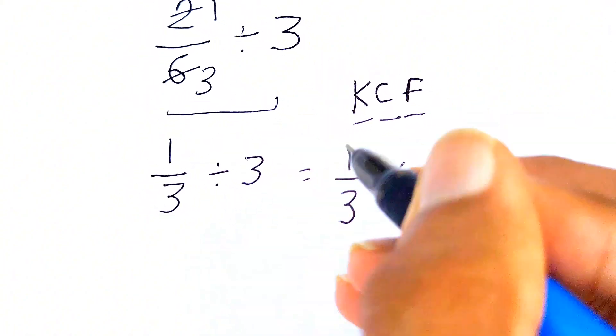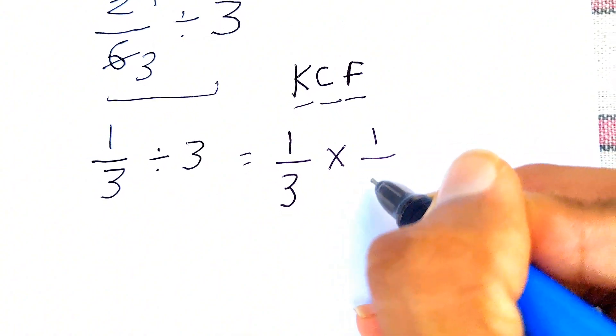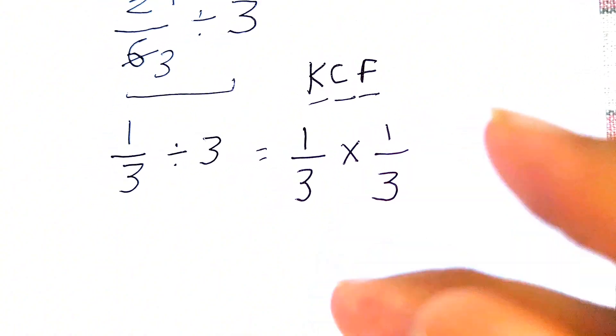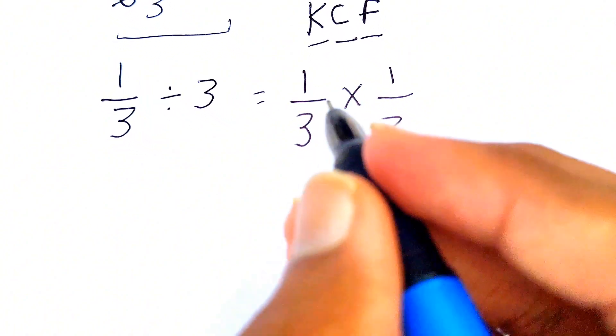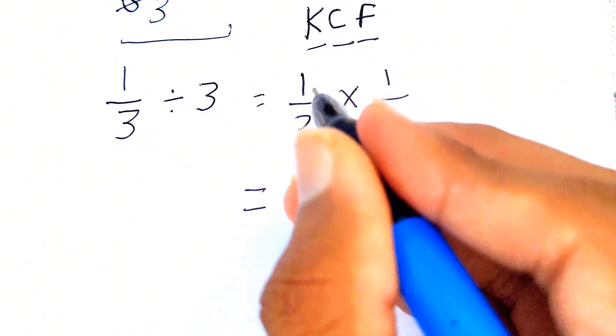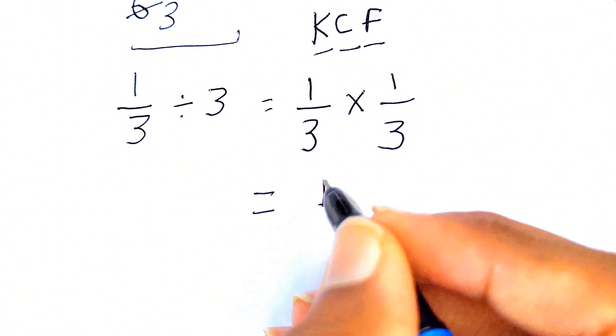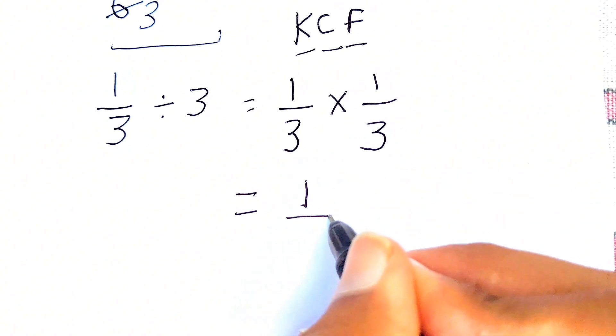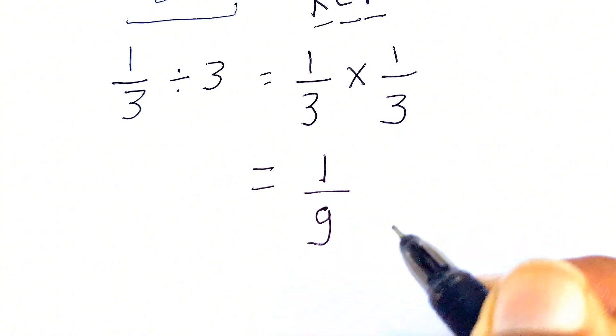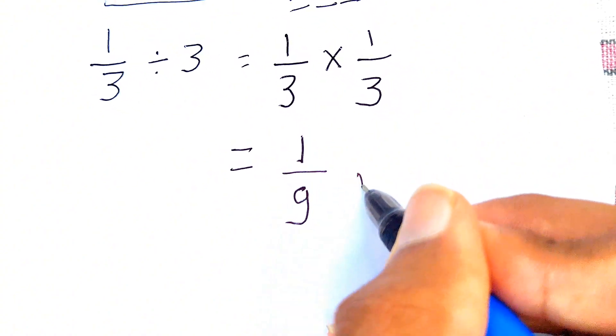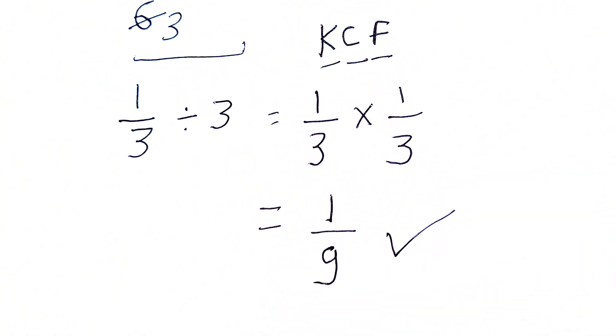Now we can simply solve this expression like 1 times 1 is simply 1 and 3 times 3 is simply 9, so the final answer is 1 over 9. Did you get this right? See you next time, don't forget to subscribe, bye bye.